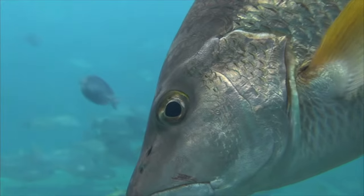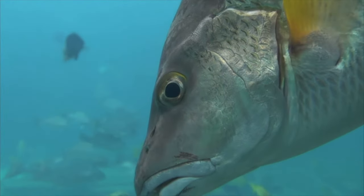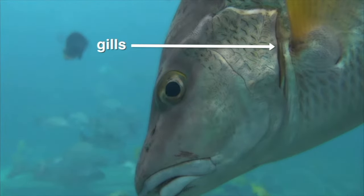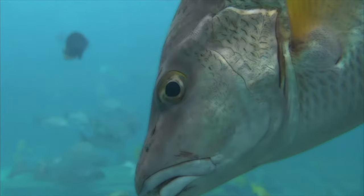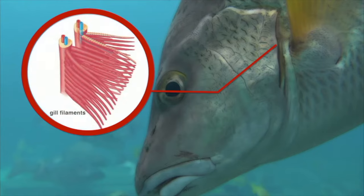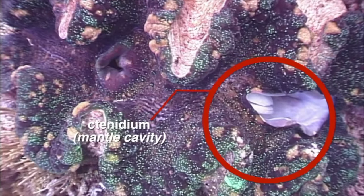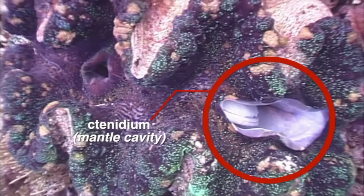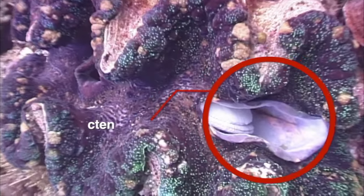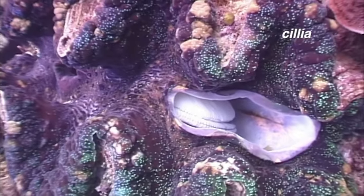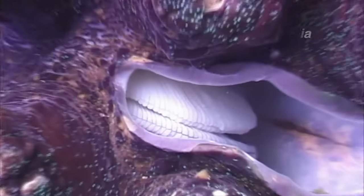Many animals, such as mollusks and fish, breathe through gills. Gills are tissues that present a large surface area for exchanging oxygen and carbon dioxide. In fish, water passes over fine thread-like filaments where gas exchange takes place. Most aquatic mollusks breathe with a gill structure called the tinidium, located in the mantle cavity. This comb-like gill is covered with fine hair-like structures called cilia, and the motion of the cilia draws water over the gill surface where oxygen is absorbed.